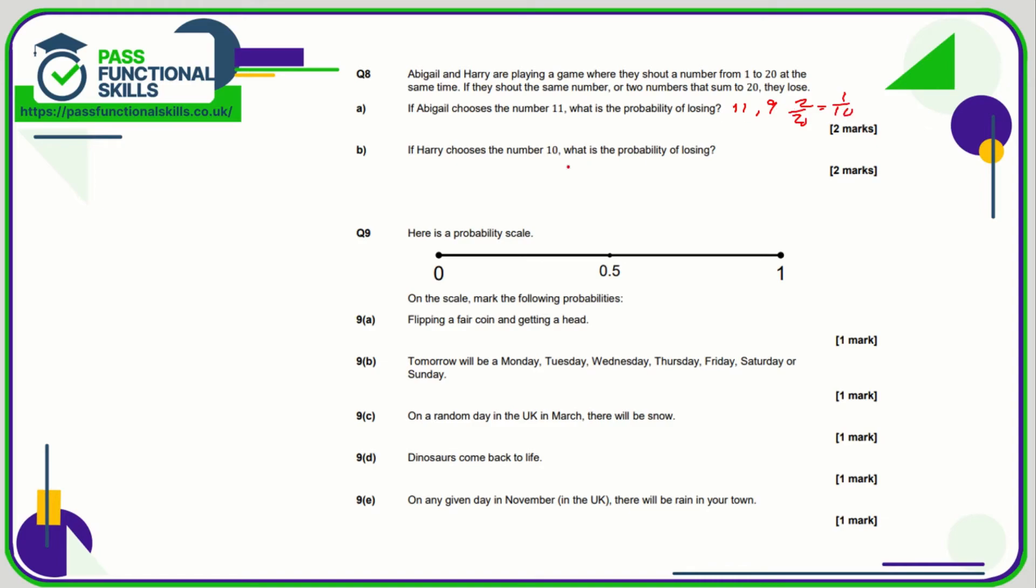If Harry chooses a number 10, then the probability of losing is only 1 out of 20, because the only number that will cause him to lose is if Abigail also shouts the number 10, and only 10 will work.